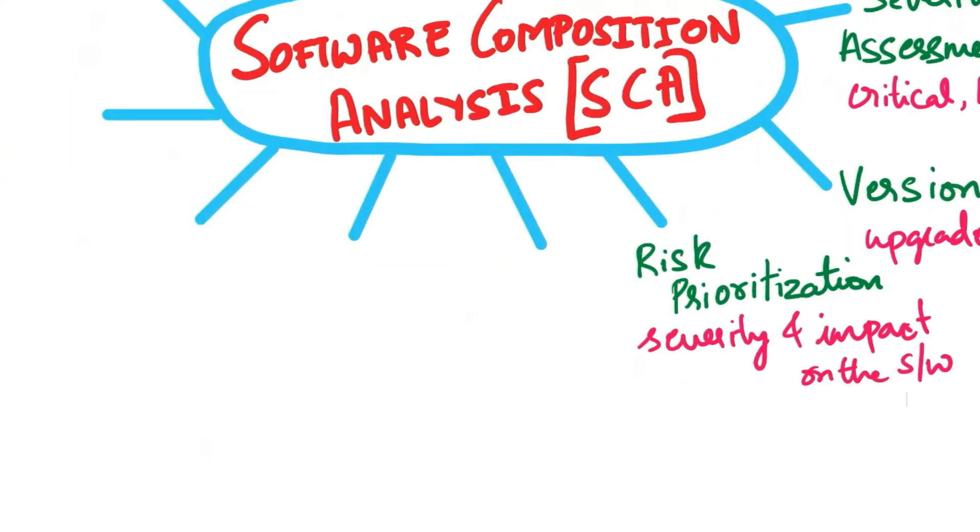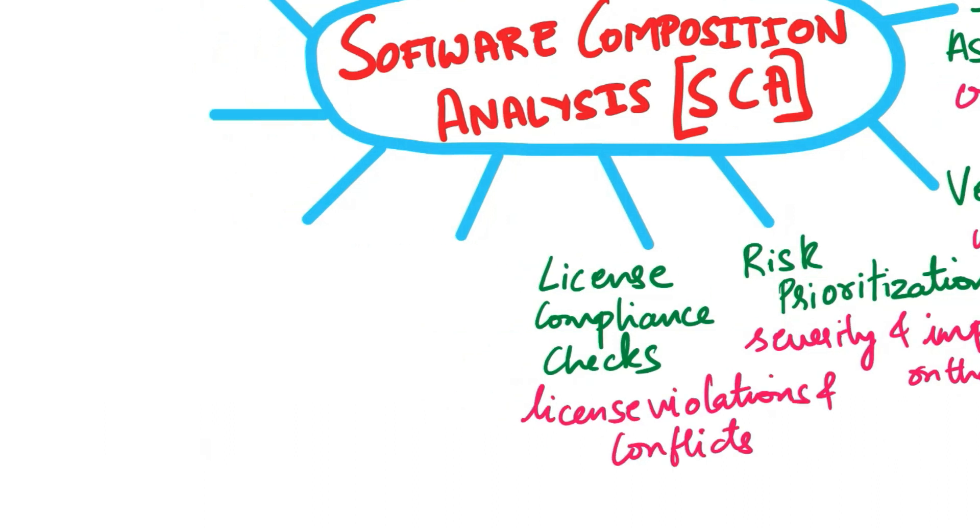Next is license compliance checks. In addition to security concerns, SCA tools also check for compliance with licensing and legal requirements associated with the use of open source software components. They identify license violations or conflicts.